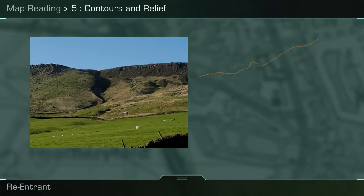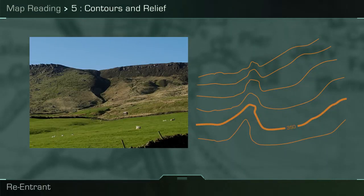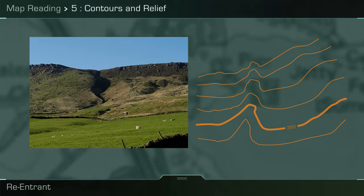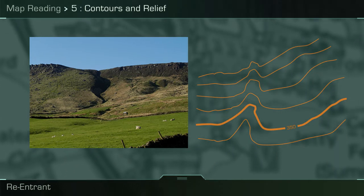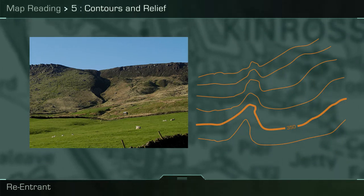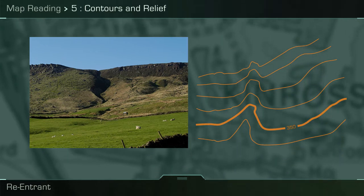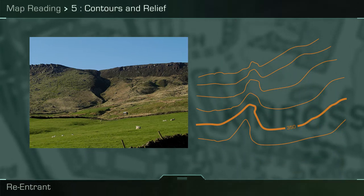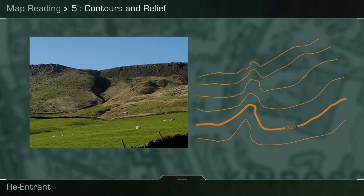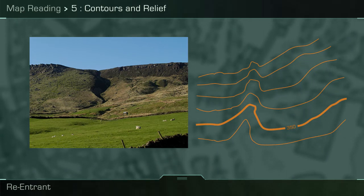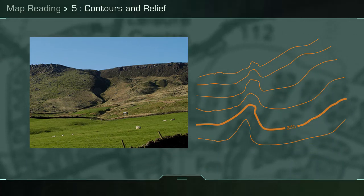A re-entrant is a term used for a small valley which is on the side of a much larger feature. On the ground it shows as a depression in the slope, whereas on a map it shows as an indentation or kink in a contour pattern. The key contour pattern is a V or U, as with the valley, however the drawing shows it is much smaller.